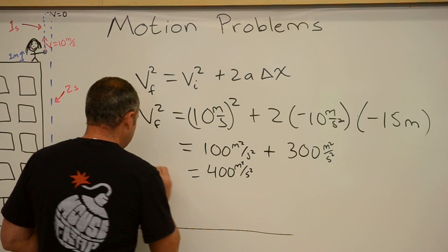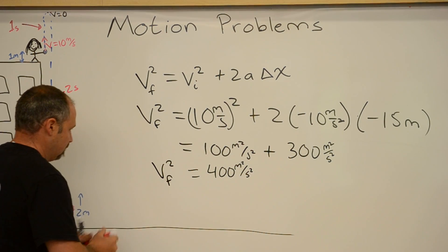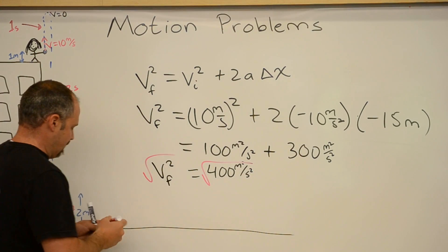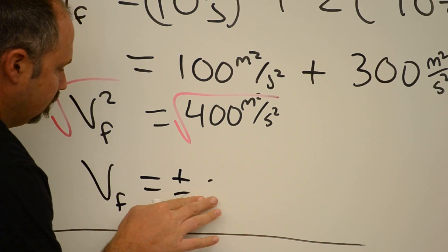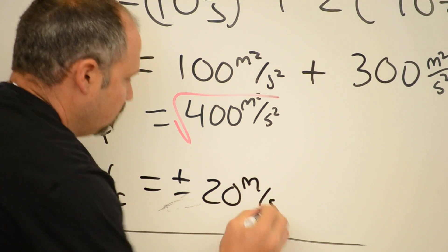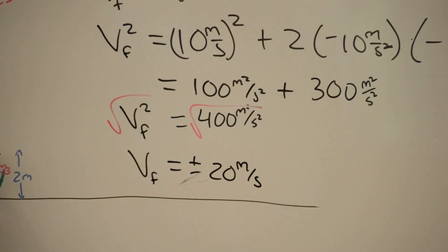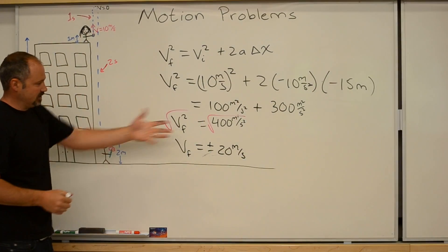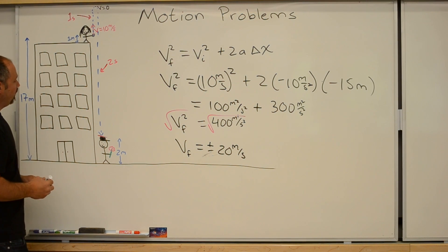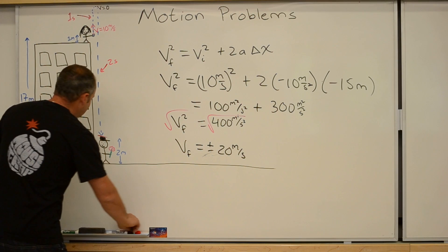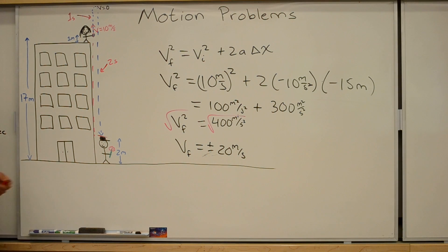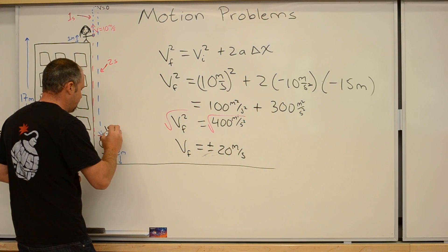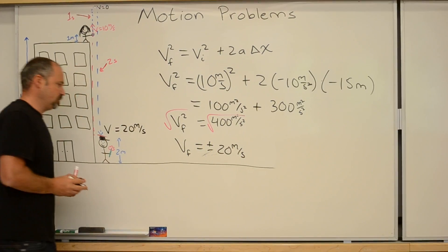If I take the square root of both sides, the final velocity is plus or minus 20 meters per second. Obviously when it hits his head, that's the negative side — negative 20 meters per second. What is the positive 20 meters per second? That's if you go backwards in time; it would have had to be launched at positive 20 meters per second to do this. So we know the balloon hits him in the head with a speed of 20 meters per second.